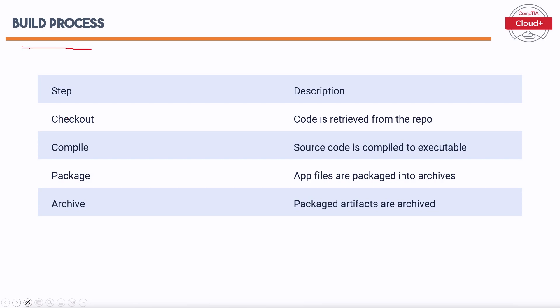The build process transforms source code into a deployable format. The key steps are: First, Checkout — code is retrieved from the repo, ensuring the build uses the latest version. Second, Compile — source code is compiled into an executable, converting human-readable code into machine-runnable format. Third, Package — app files are packaged into archives, organizing compiled code into a distributable format. Fourth, Archive — packaged artifacts are archived, enabling traceability and version control.